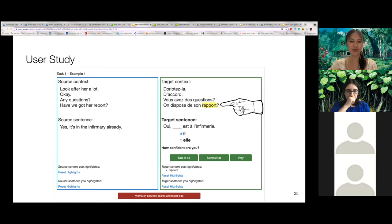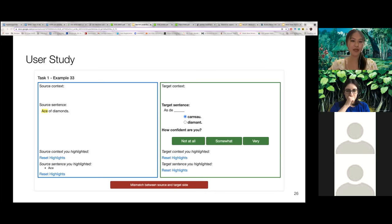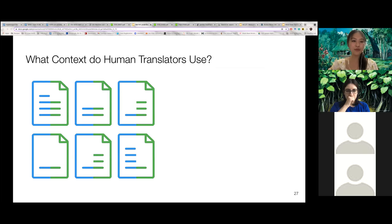So the first task is pronoun anaphora resolution, where the translator chooses the correct gendered French pronoun that is associated with a neutral English pronoun. And the second task is word sense disambiguation, where they choose the French translation for polysemous English word. And we gave translators varying amounts of the previous sentences in the English source side and the French target side as context.